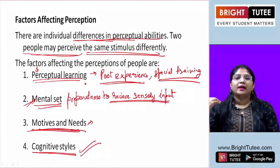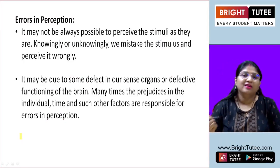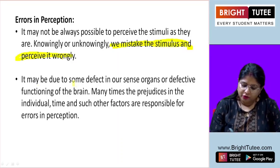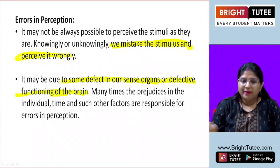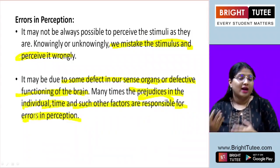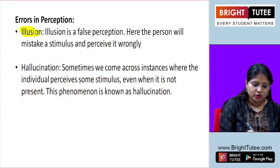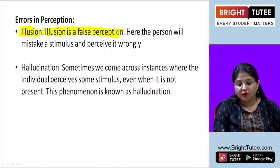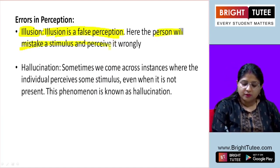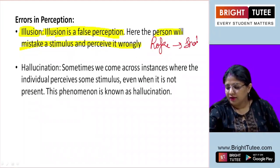Now let us look at some of the errors in perception. It is not always possible to perceive a stimulus as it is. Sometimes we mistake the stimulus and perceive it wrongly. This may be due to a defect in our sense organs, defective functioning of the brain, prejudices in the individual, time, and other such factors. The first error is illusion — a false perception where things are not as they are. For example, when you see a rope in the dark, you might perceive it as a snake. Looking at something and perceiving it in the wrong way is what we call illusion.